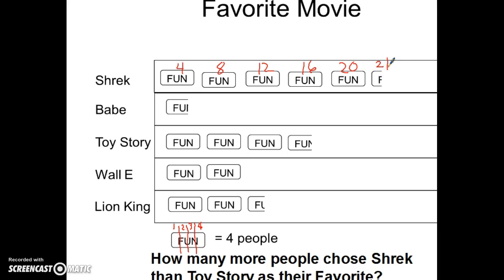If I go to Babe, it's not even a whole 4. It looks like it's cut right in the middle of the N, which would give me a 3. So 4, 8, 12, plus 3 more gets me to 15. Then 4 and 8 — we're in the middle of the U, right in the middle — so that would give me 2 more, which gets me to 10.